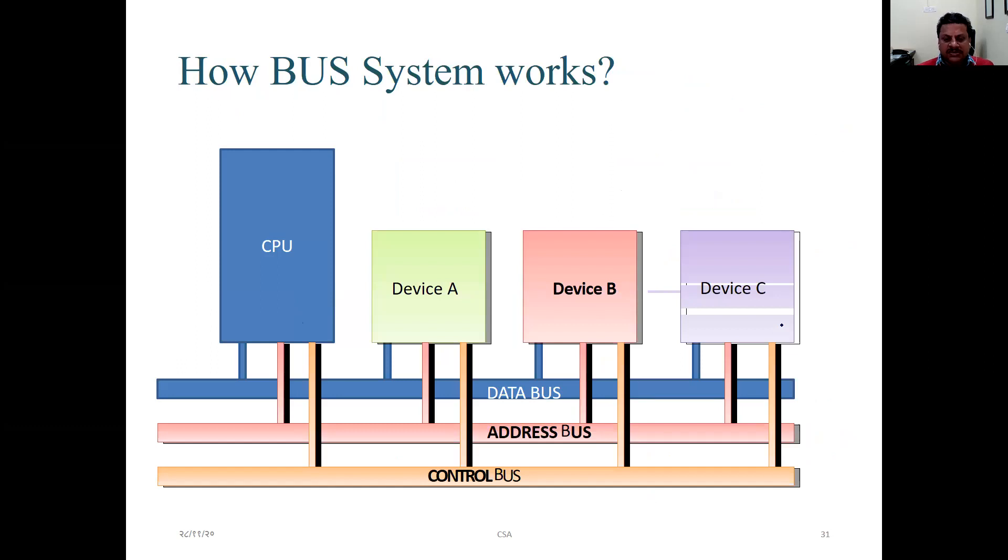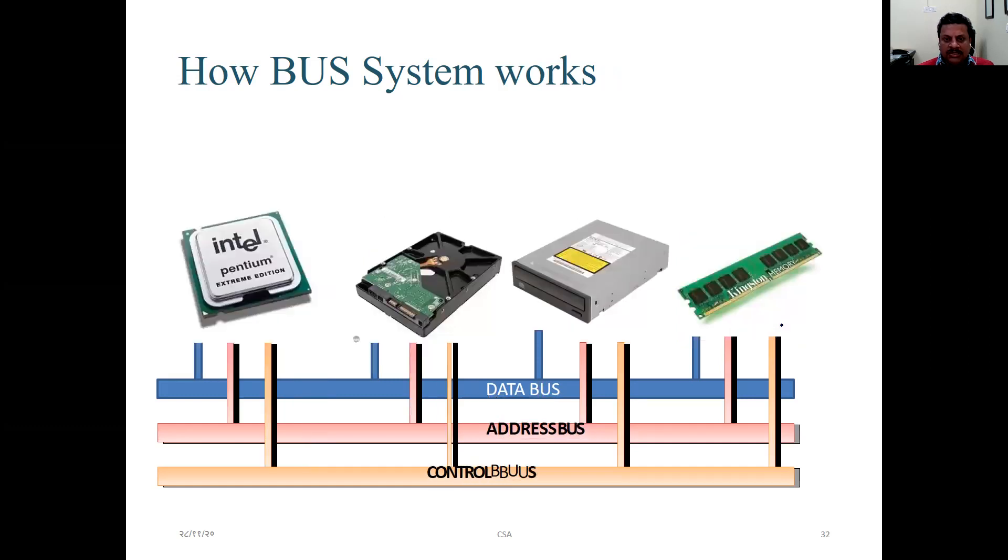So how bus system works. That is different devices are connected. Devices could be printer, devices could be monitor, devices could be any peripheral device. And CPU can also be seen in line with these devices. Then you have different path for data bus, address bus and control bus. These are some popular bus systems works, that is you have been shown Intel hard disk and how those things work.